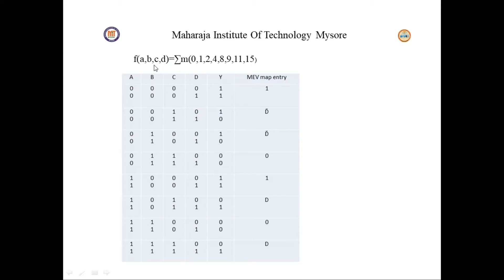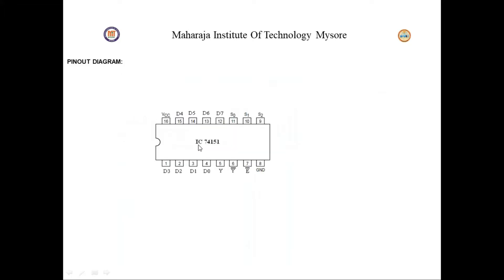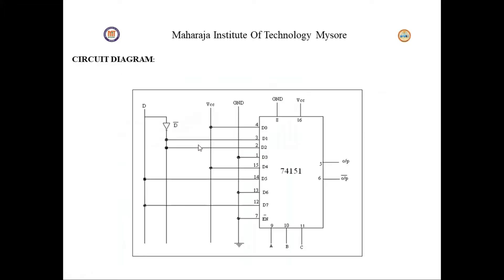This will be the function for which we need to write the truth table. We need to verify this truth table by making the circuit diagram connections. First we will see how the truth table will look. IC 74151 is your main IC and IC 7404 is your NOT gate.